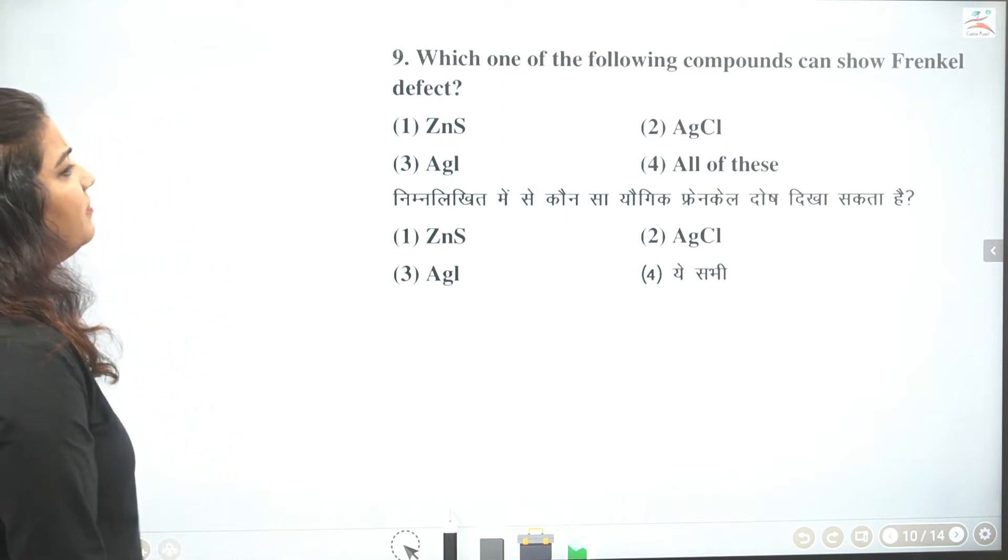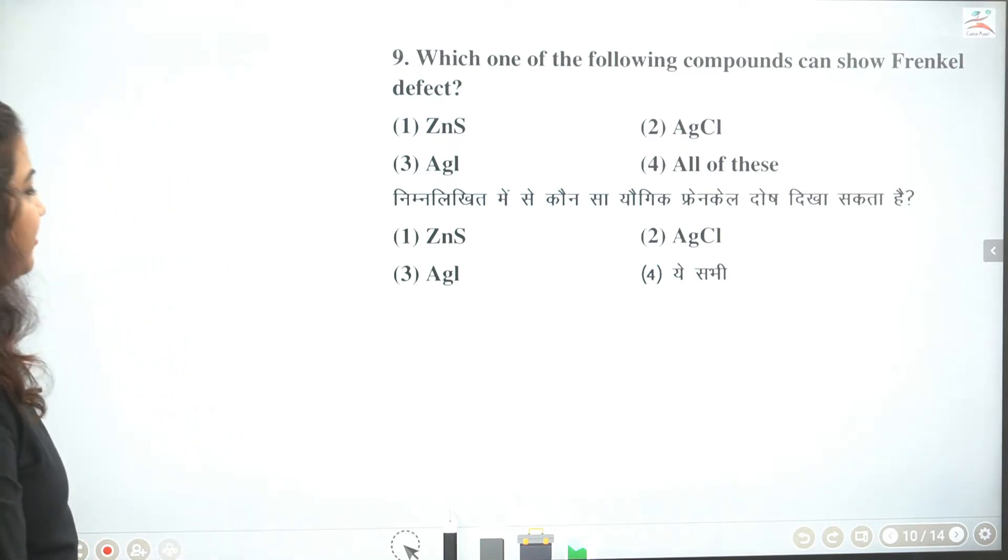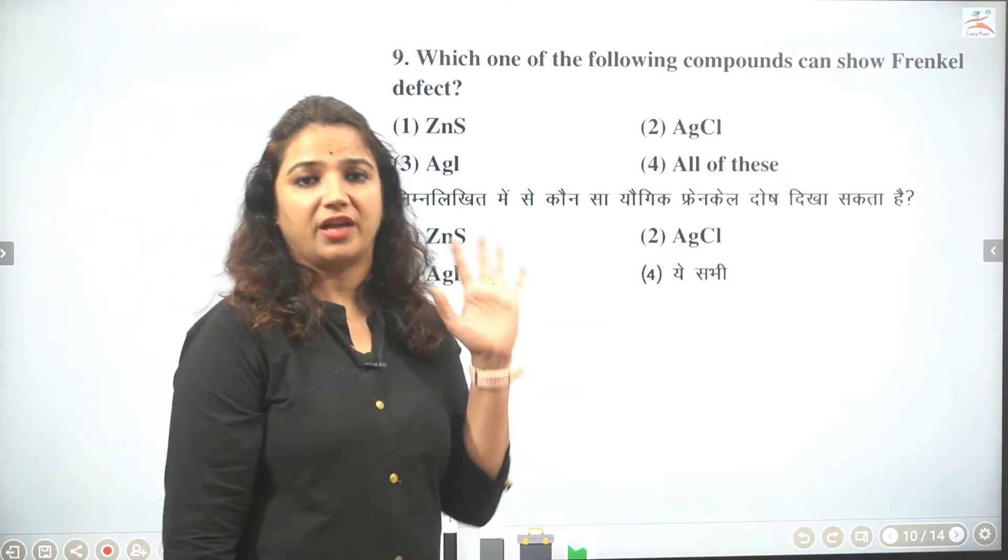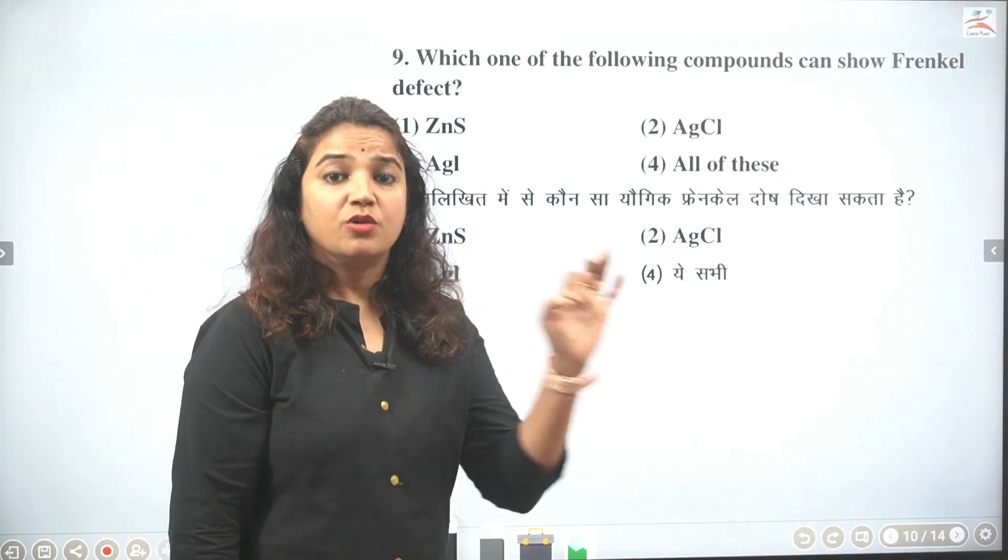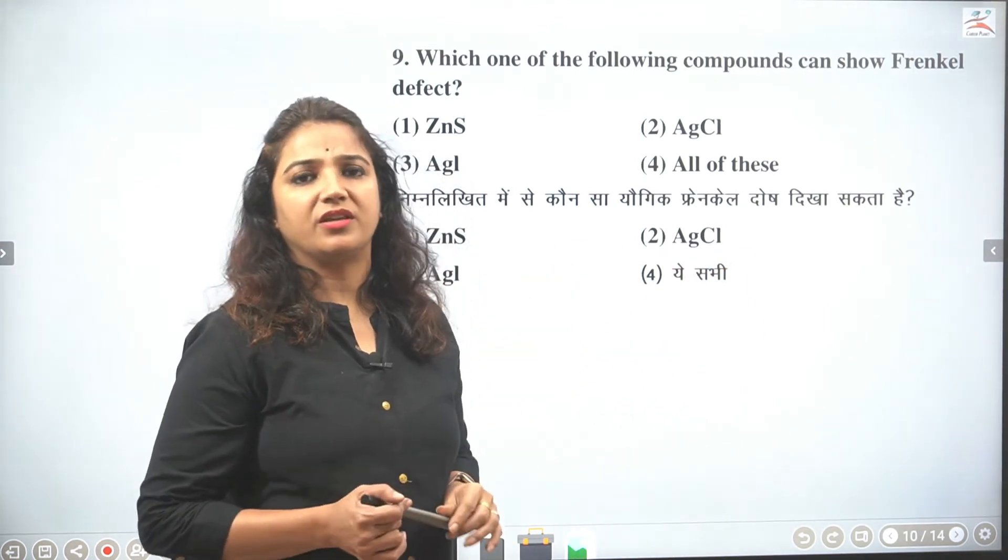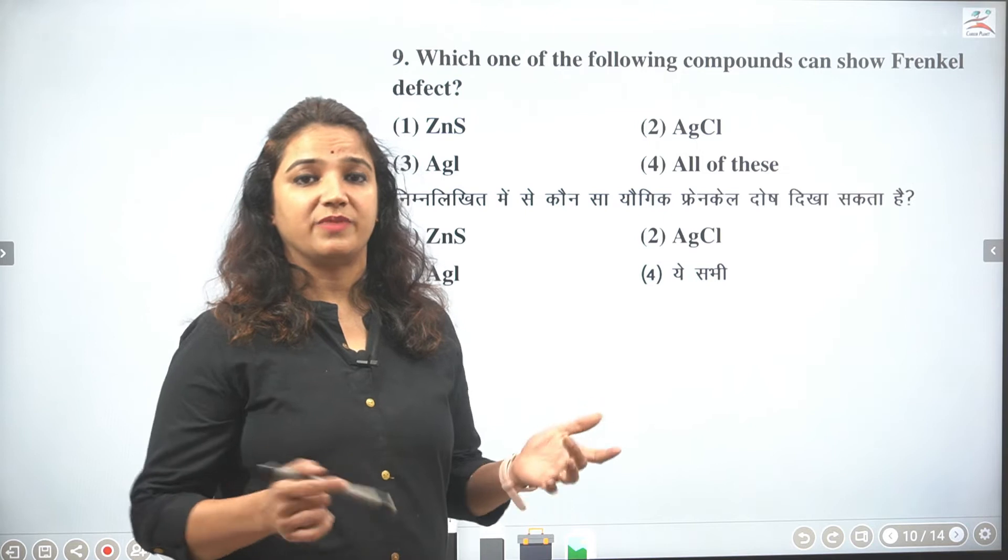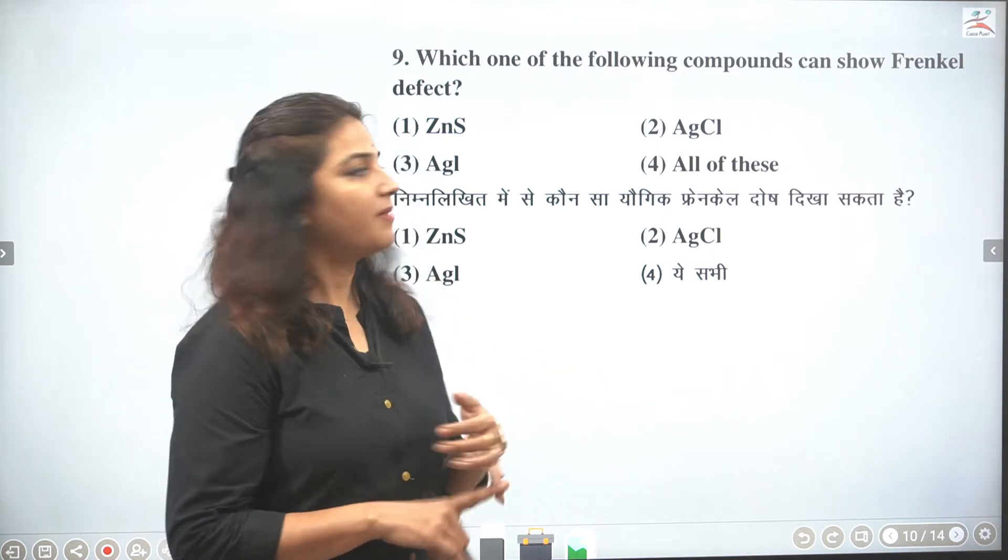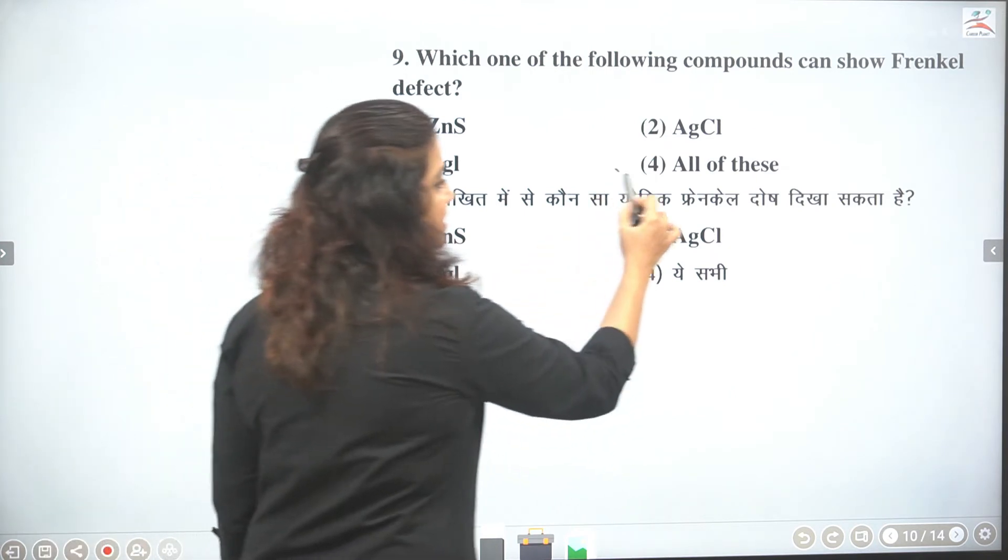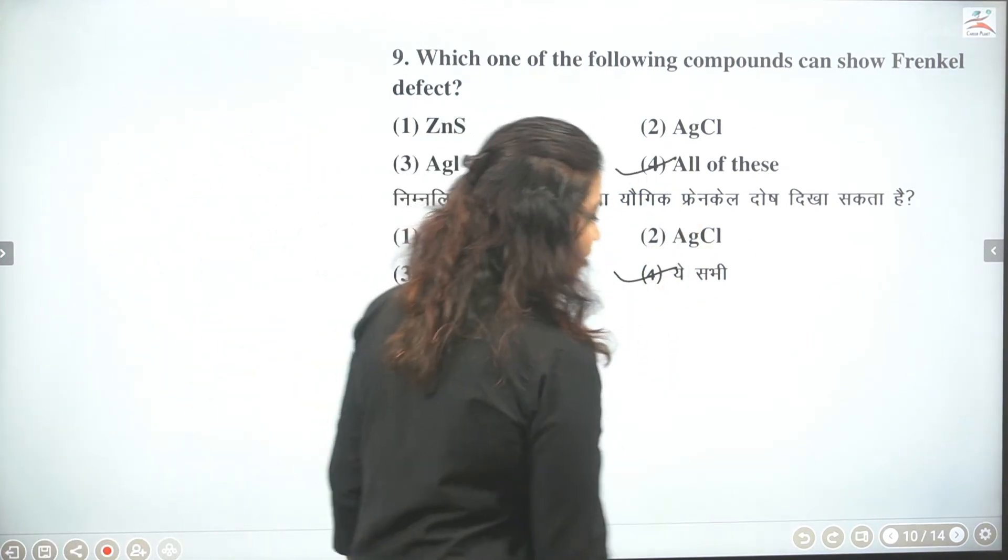Then which of the following compounds can show Frenkel defect. Toh Frenkel defect us mein hona chahiye jis mein coordination number kam hota hai. Frenkel defect us mein hota hai jis mein coordination number kam hota hai. Less coordination number. Toh hum kahenge less mein ZnS bhi sahi tha. Ya nahi, AgCl, AgBr, AgI jis sabse sahi hai. So saare answer kis mein mil gahe. Toh hum kahenge all ho jayega.